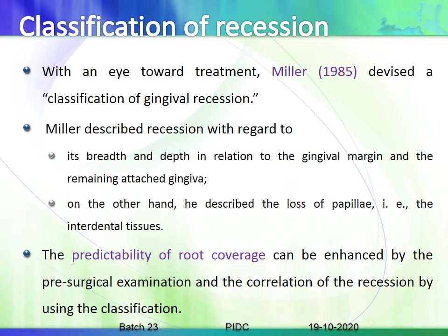Before going into the treatment part, we need to know the classification of recession. This was given by Miller with an eye towards treatment. Miller devised a classification of gingival recession based on its breadth and depth in relation to the gingival margin and the remaining attached gingiva, and also the loss of the papilla — the interdental tissues. His classification helps in determining the treatment plan and the predictability of root coverage.